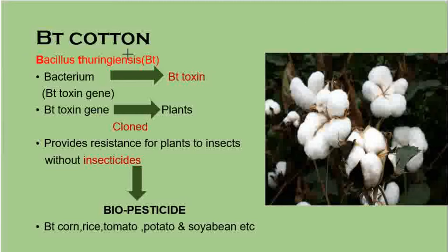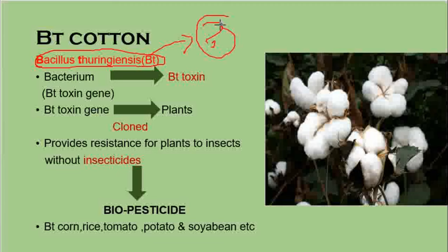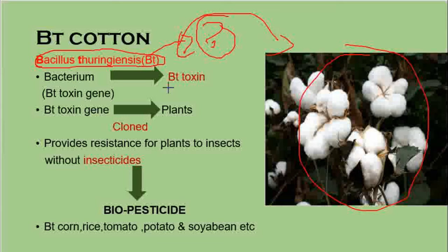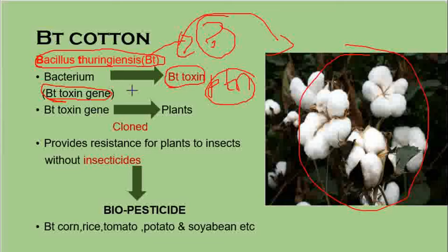In Bt cotton, Bacillus thuringiensis is the bacterium used. This bacterium produces a toxin called Bt toxin, produced from the Bt toxin gene. Since the toxin is a protein, it must have a gene that expressed it — and that is the Bt toxin gene.